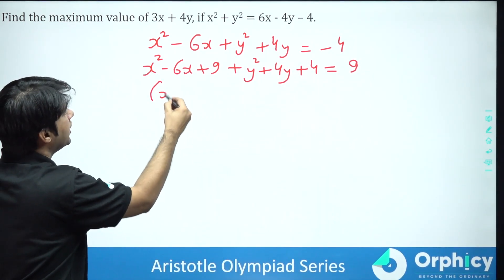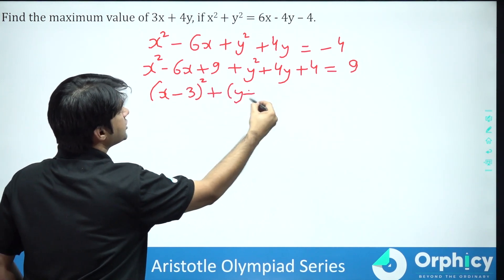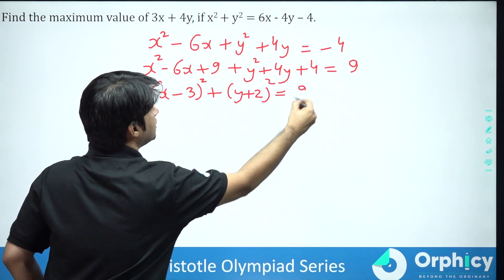This will reduce to x minus 3 the whole square plus y plus 2 the whole square is equal to 9.